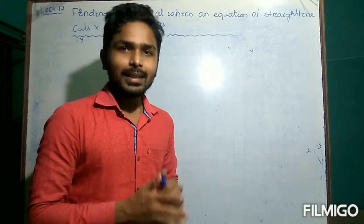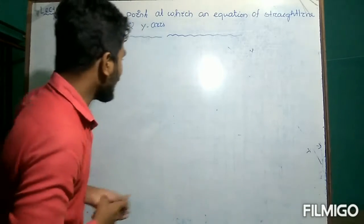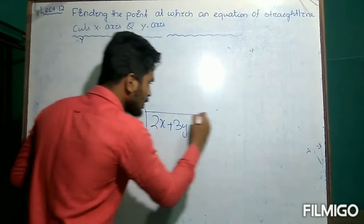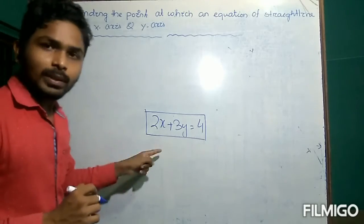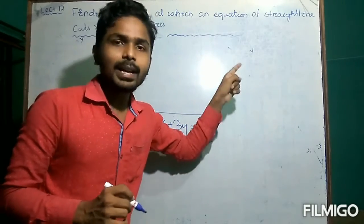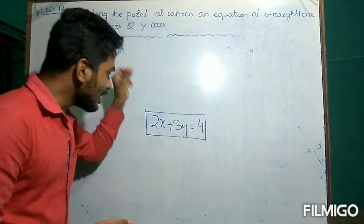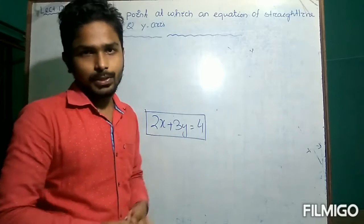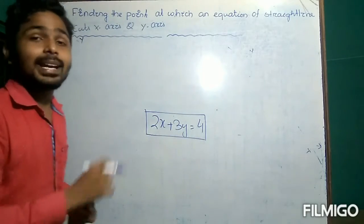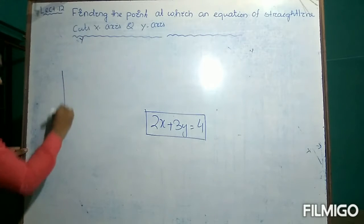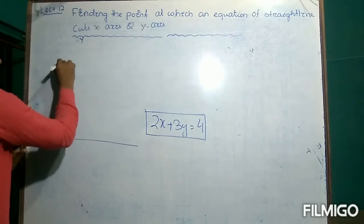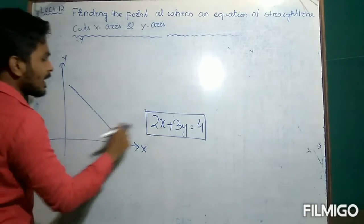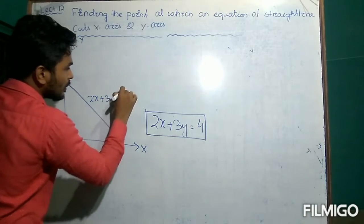In this lecture we will discuss: whenever there is a linear equation in 2 variables, like 2x plus 3y is equal to 4, this linear equation can be represented on a Cartesian coordinate system. You can draw the graph of this linear equation and while drawing the graph you will get a straight line. So if you draw the graph of this linear equation then you will get a straight line, and this straight line represents the equation 2x plus 3y is equal to 4.